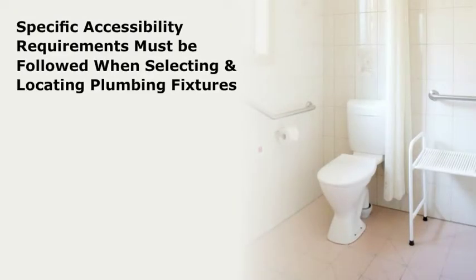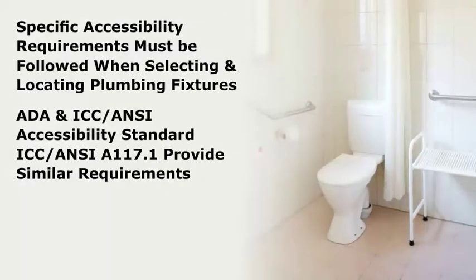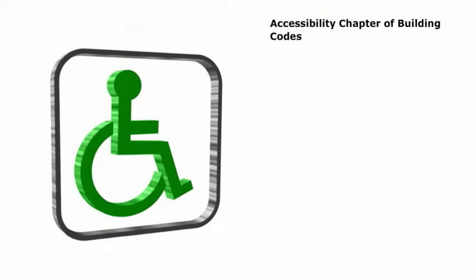Specific accessibility requirements must be followed when selecting and locating plumbing fixtures. Both the Americans with Disabilities Act standards and the ICC-ANSI accessibility standard ICC-ANSI A117.1 provide similar requirements. Accessibility requirements are also found in the Accessibility Chapter of the Building Codes. The Building Codes then reference the ICC-ANSI standard for specifics.